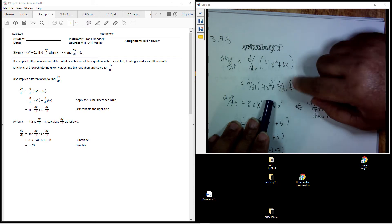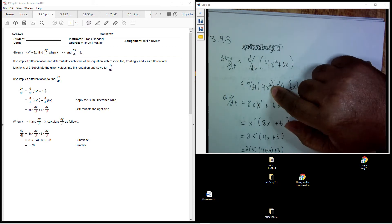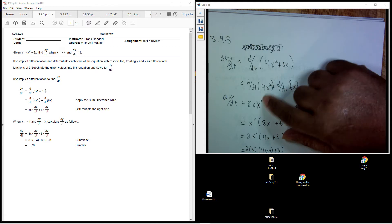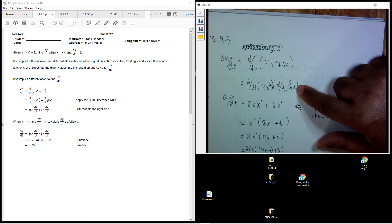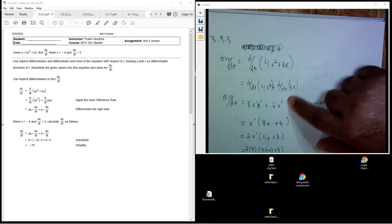So x here is a function. When I take the derivative of this 4x squared, I'm going to have 8x times x prime. And when I take the derivative of 6x with respect to t, I'm going to have 6x prime.